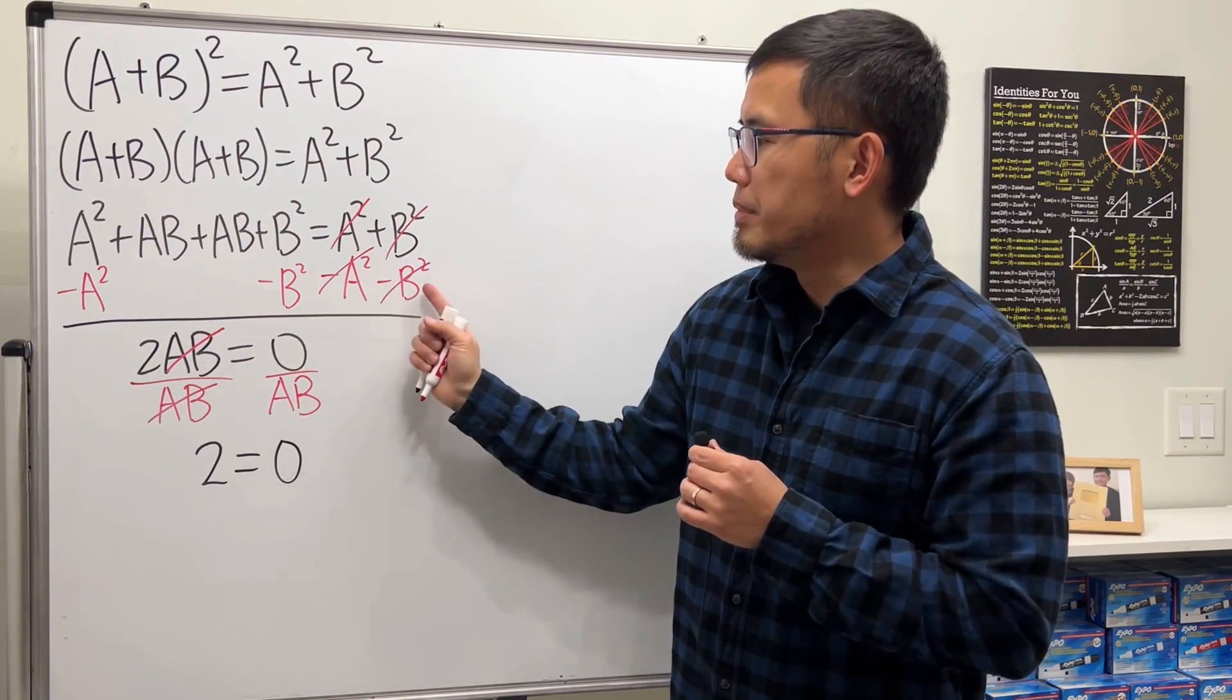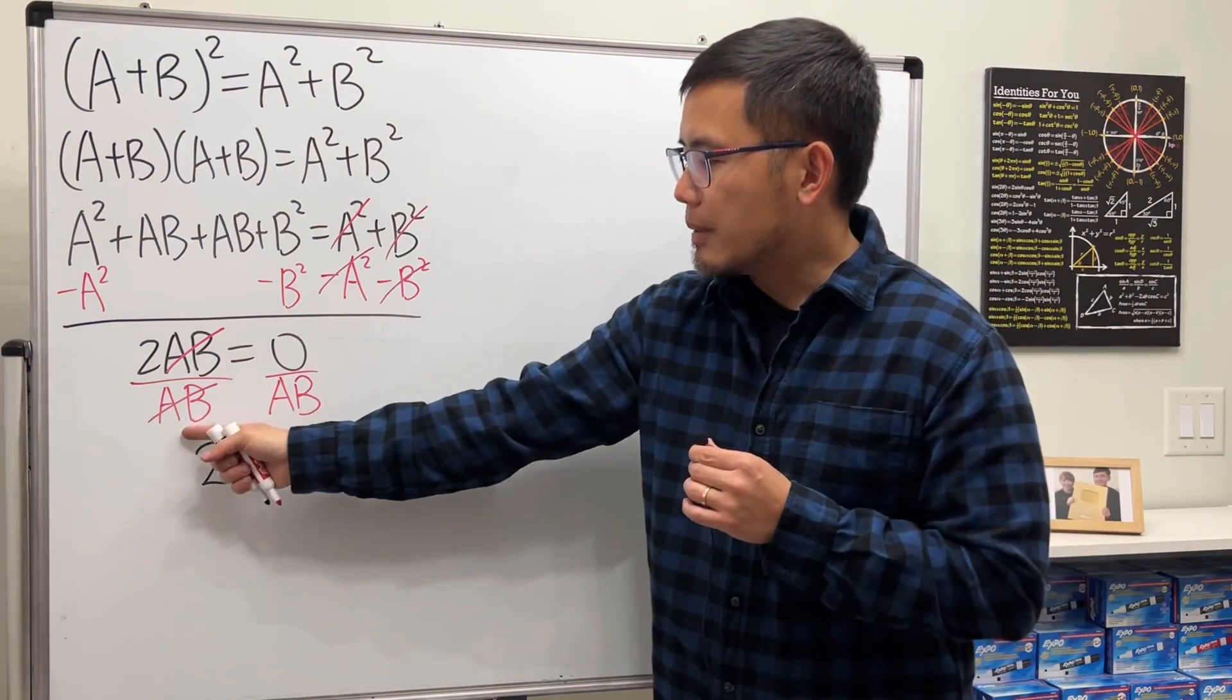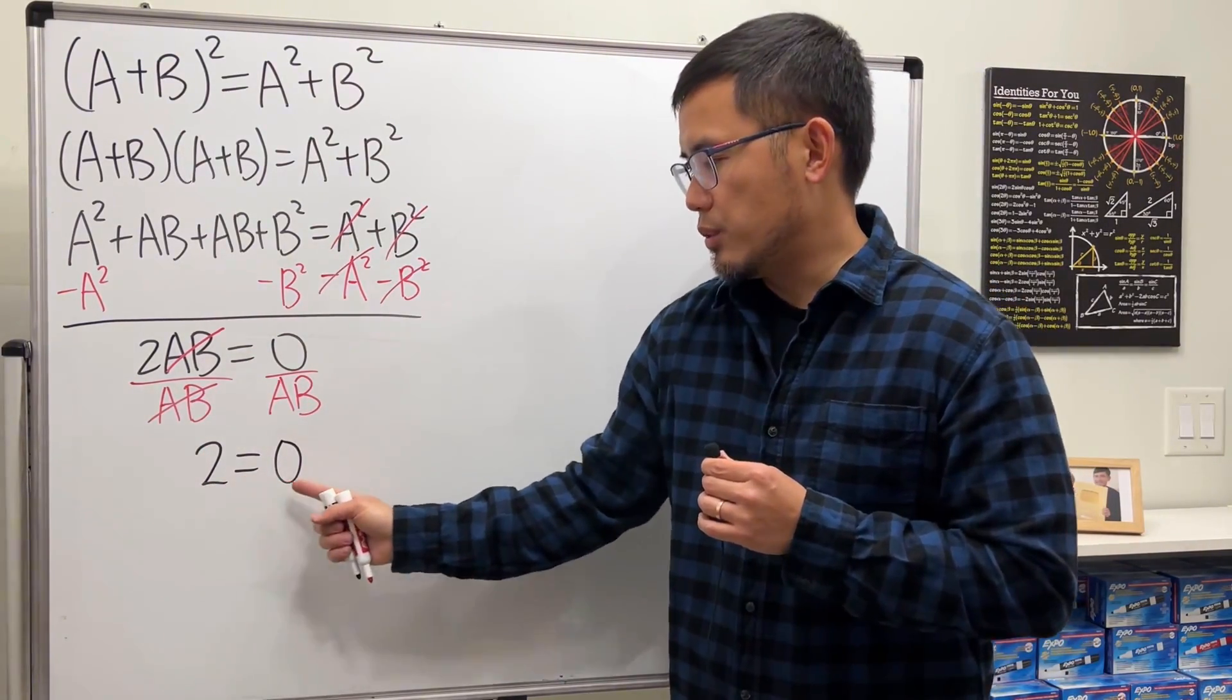And then let's just subtract a squared and b squared on both sides, and we get 2ab is equal to 0, and then divide both sides by ab, and we see that 2 is equal to 0.